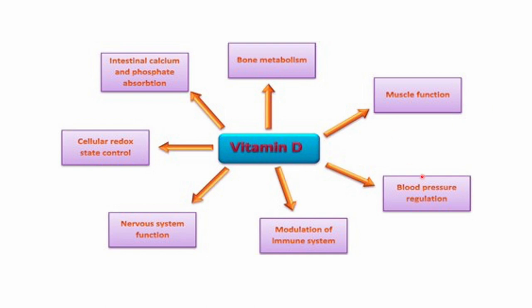Vitamin D receptors have been reported to be found in many tissues of the body, including our immune system. We find them in the brain, heart, pancreas, and even intestines. This suggests that vitamin D plays a role in these tissues. Taking it a step further, it can also explain its association with a wide variety of conditions, such as type 1 and type 2 diabetes, multiple sclerosis, schizophrenia, and even some cancers. Vitamin D plays lots of roles.